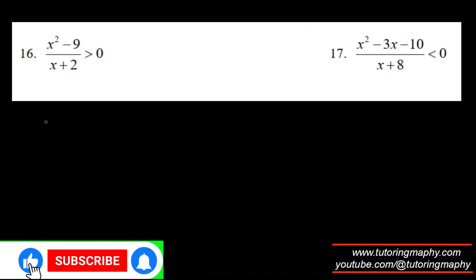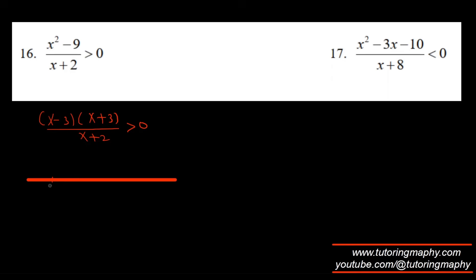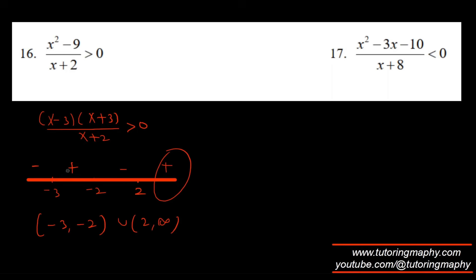For the next inequality, factorize the numerator as x minus three times x plus three over x plus two, greater than zero. All powers are odd, so plot roots negative three, negative two, and two, then alternate signs starting positive from the right. We need greater than zero, so the answer is the open interval negative three to negative two union two to infinity.